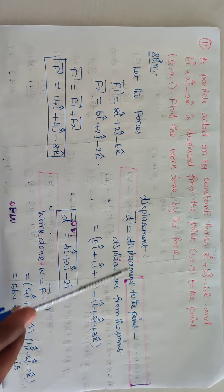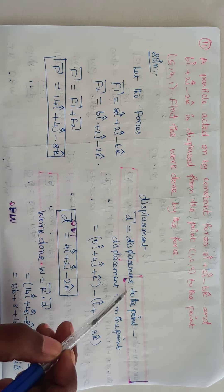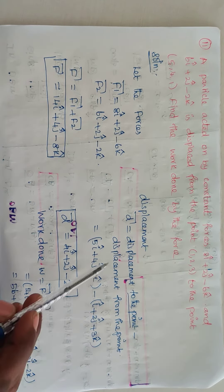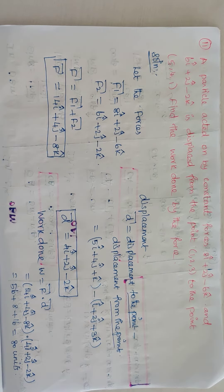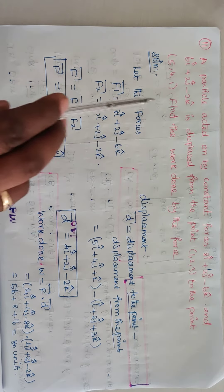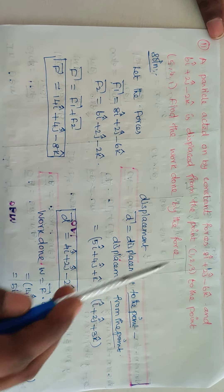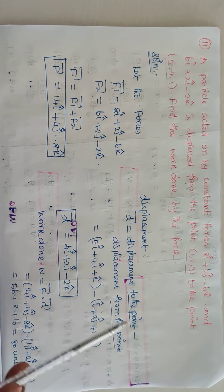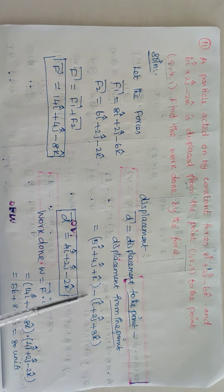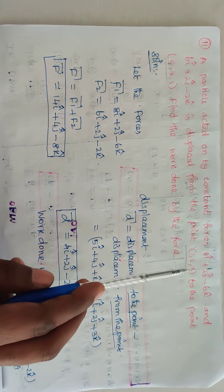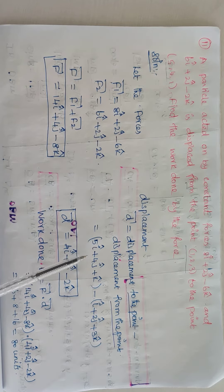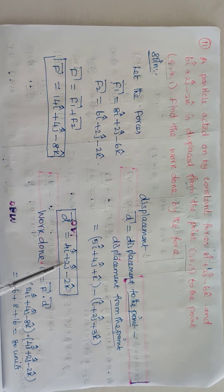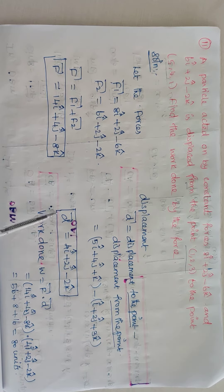Next, we find the displacement vector D. The formula is: displacement = (to the point) − (from the point). The particle is displaced from point (1, 2, 3) to point (5, 4, 1). So D = (5i + 4j + k) − (i + 2j + 3k), which gives us 4i + 2j − 2k.